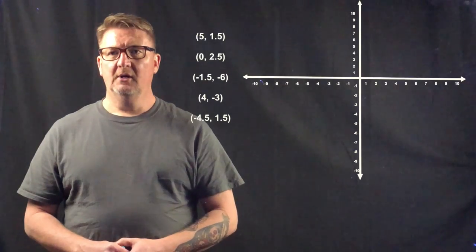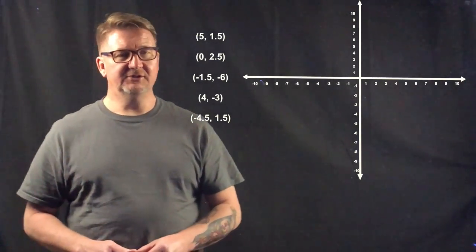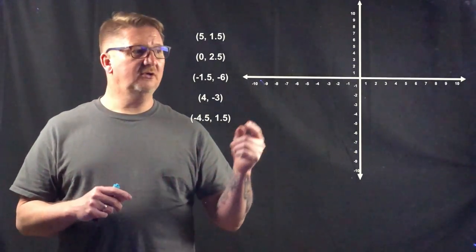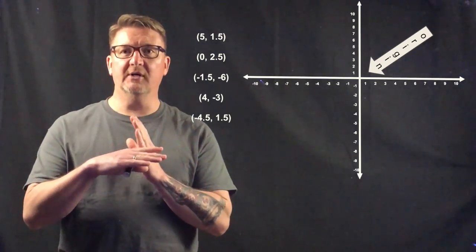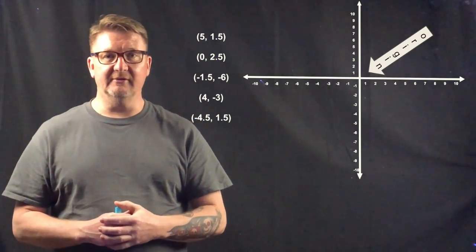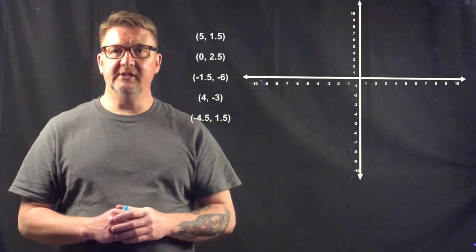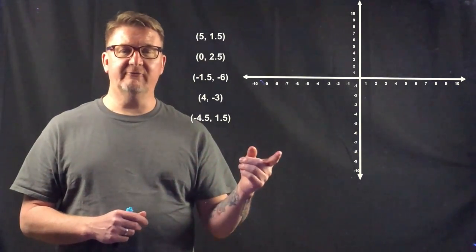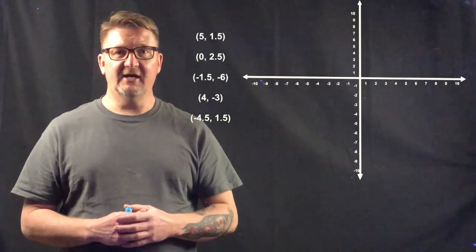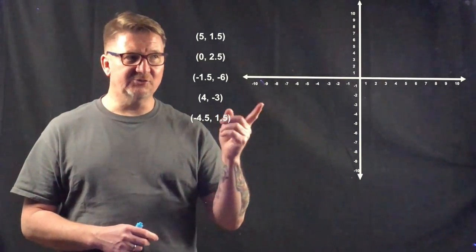I have this coordinate plane and I want to draw a polygon given these set of points. The first set of points is (5, 1.5). What you have to do is start at the origin. The origin is the point where the two axes meet — the x-axis and the y-axis. The first number in the ordered pair is your x-coordinate; that tells you how far to go left or right. So for 5, we go to the right 5 places, and then we go up 1.5 places. And that's where your point goes.